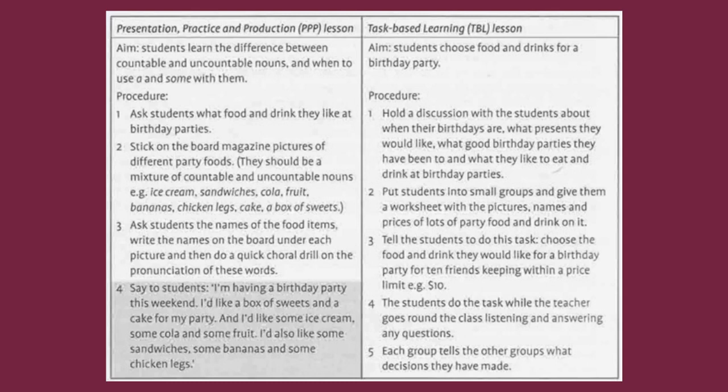1. Hold a discussion with the students about when their birthdays are, what presents they would like, what good birthday parties they have been to, and what they like to eat and drink at birthday parties. 2. Put students into small groups and give them a worksheet with the pictures, names, and prices of lots of party food and drink on it. 3. Tell the students to choose the food and drink they would like for a birthday party for 10 friends, keeping within a price limit, e.g. $10.